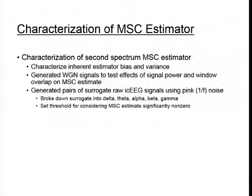To do this, we generated pairs of white Gaussian noise signals that mimic our band power time series — one hour long at a one-second resolution — and used these pairs to test the effects of signal power and window overlap on the MSC estimate.